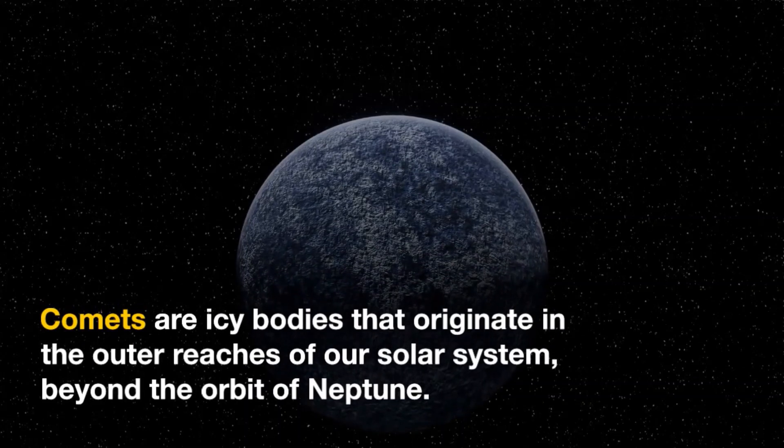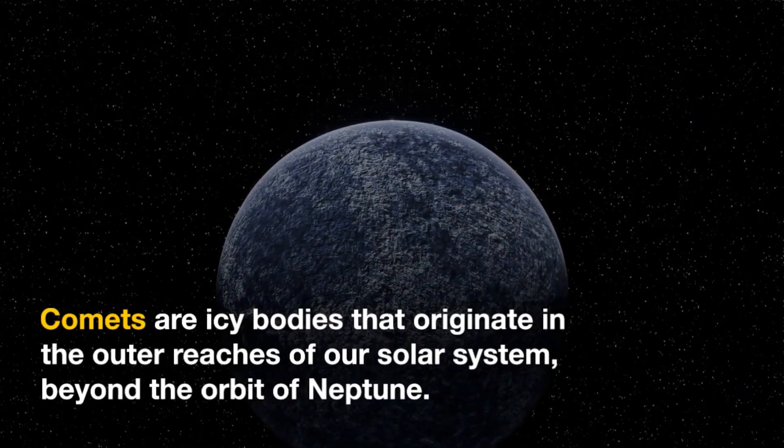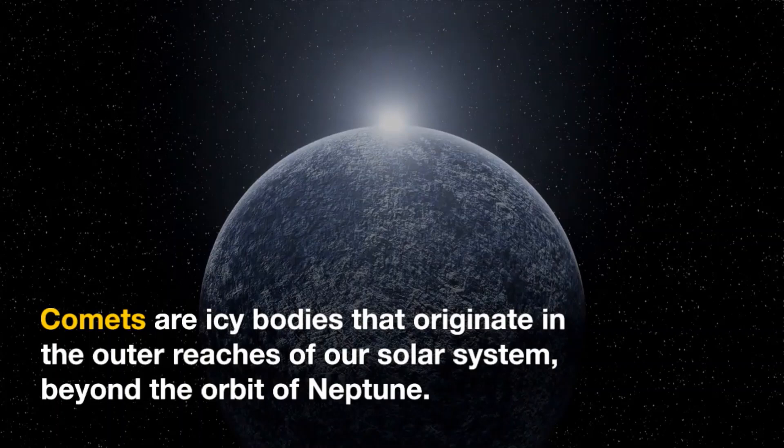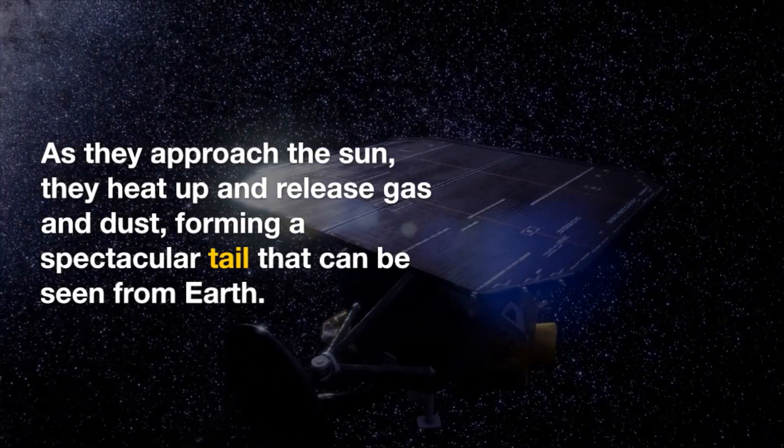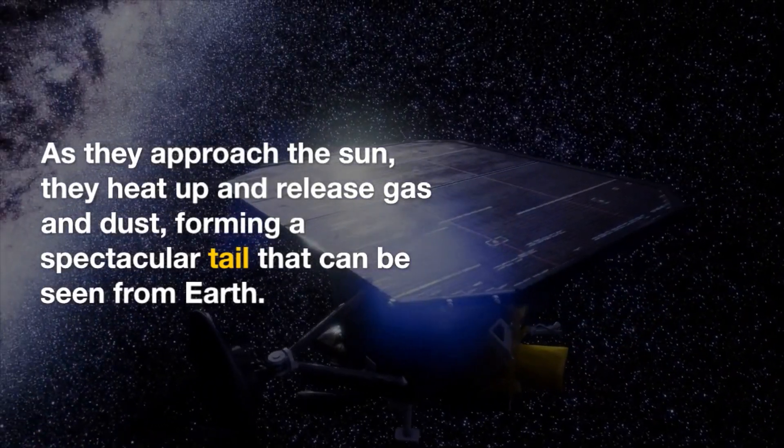Comets are icy bodies that originate in the outer reaches of our solar system, beyond the orbit of Neptune. As they approach the Sun, they heat up and release gas and dust, forming a spectacular tail that can be seen from Earth.